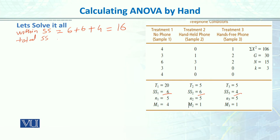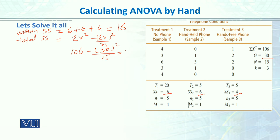Total SS formula is: summation X squared minus (summation X whole squared) over N. Summation X squared equals 106, and summation X total is 30, with N equal to 15. Solving this gives total SS equal to 46. Between SS is the easiest to find: total SS minus within SS equals 46 minus 16 equals 30.